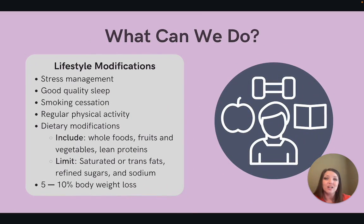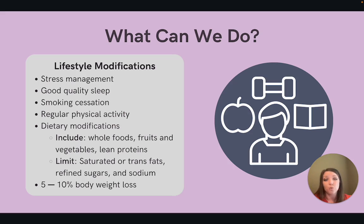The good news is that the risk of metabolic syndrome can be reduced significantly by making lifestyle changes. These lifestyle changes can include stress management, getting good quality sleep, and smoking cessation. Regular physical activity is an important piece of this puzzle as well. Current recommendations are that adults get 150 minutes of moderate intensity physical activity each week, including muscle strengthening activity at least twice a week.